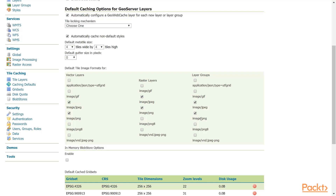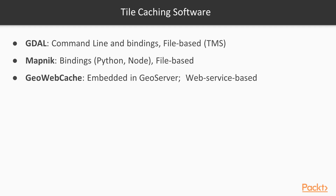PNG 8 uses 8 bits. There are a number of software options for tile caching with your map app. Some of these include GDAL, the popular command line geospatial utility, MapNIC, which is the backend for the MapBox project and others, and GeoWebCache. GeoWebCache is available as a standalone instance but is also embedded in GeoServer, so we will focus on GeoWebCache.